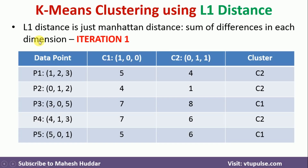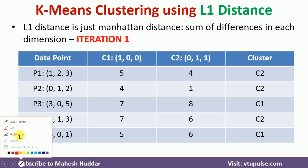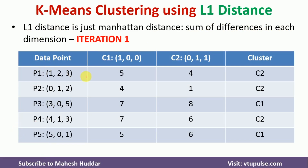First, let's understand what L1 distance is. L1 distance is the sum of differences in each dimension. We need to find the absolute difference between each dimension and then find the sum of those differences — that is the L1 distance.